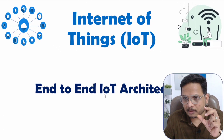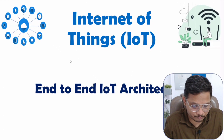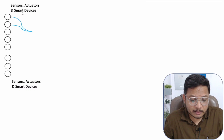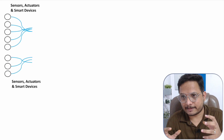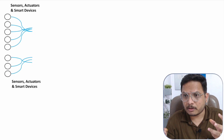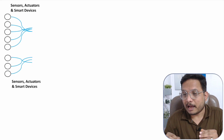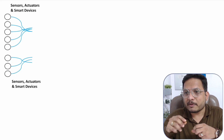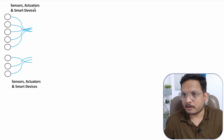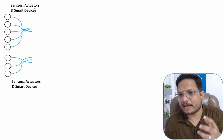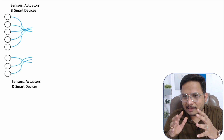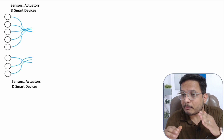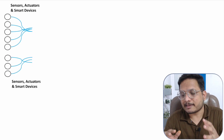IoT stands for Internet of Things, and it begins with 'things.' Things refers to devices acting as nodes — these include sensors, actuators, and smart devices. Sensors sense physical entities like temperature, moisture, and sound. Actuators provide physical responses, such as valves, water control, and LEDs. These things are embedded systems with microcontrollers or microprocessors interfaced with sensors and actuators.